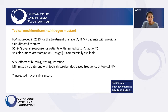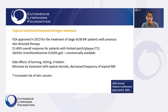Another medication is Valchlor, or topical nitrogen mustard. This was approved for patients who may have tried skin-directed treatments like steroids before, and it has a good overall response rate in terms of getting some skin clearing. It can cause burning, itching, or irritation at the site where it's applied. Ways to minimize this include using topical steroids as well or decreasing the frequency of the Valchlor. There is some data that this may contribute to some increased risk of other skin cancers, so something to keep in mind if considering this treatment.